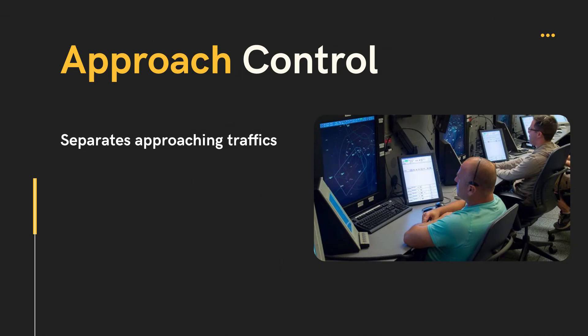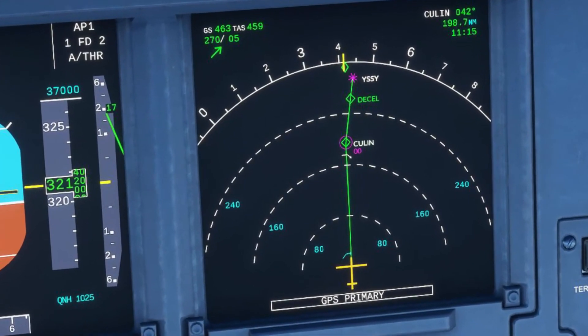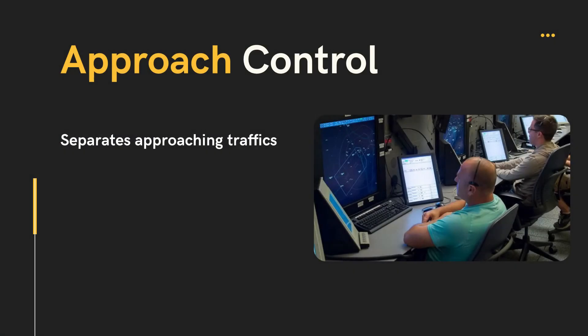After the en route phase has finished and the top of descent point has been reached, we start our descent for the airport we will land at. Now it's time to be transferred to approach control. While approaching the related terminal area, en route controllers transfer us to the approach controller for the related airport. Many airports have a radar control facility associated with the airport, referred to in most countries as terminal control.